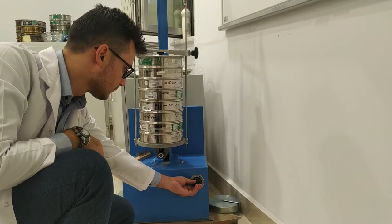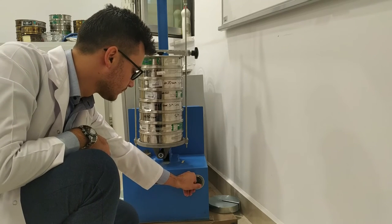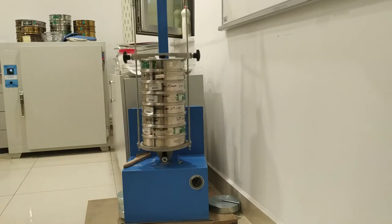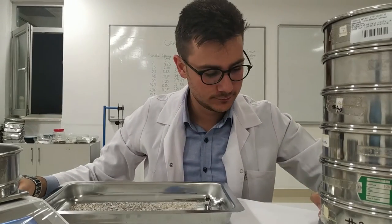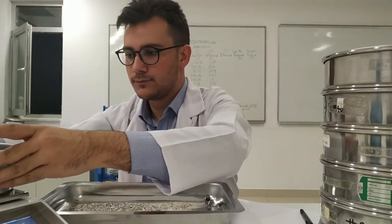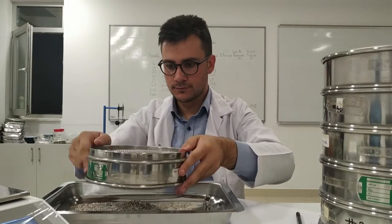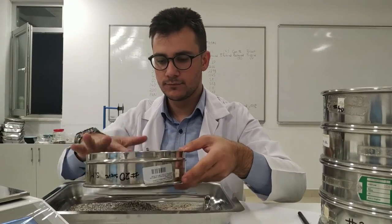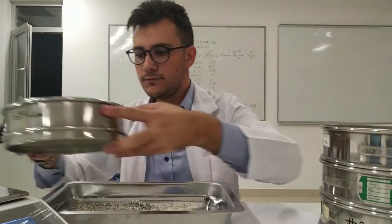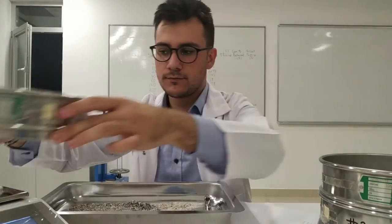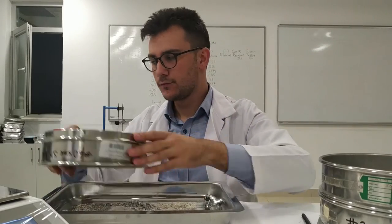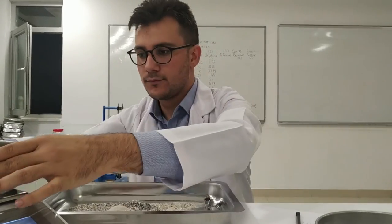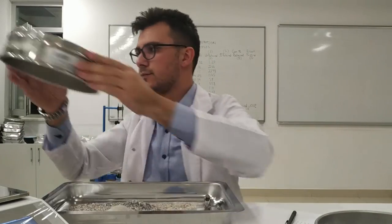When shaking is complete, raise the holding bar and remove the stack of sieves for weighing. In the fourth step, you must weigh each sieve with its contents. Weigh each sieve with the retained soil starting with the top sieve and record the measured value in your data sheet. Once you have weighed a sieve, empty its contents into a tray. Once you have completed weighing all of the sieves, calculate the weight retained, percent weight retained, cumulative percent weight retained, and lastly the percent passing for each sieve.